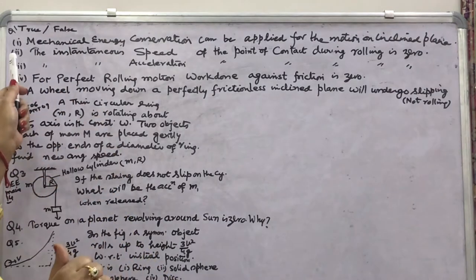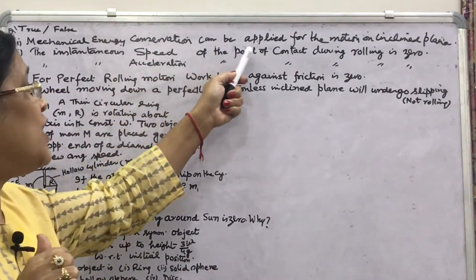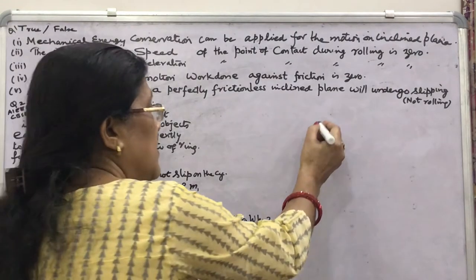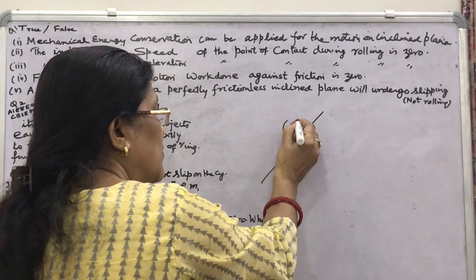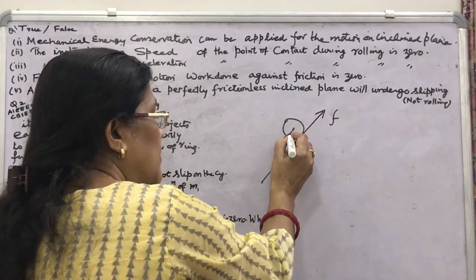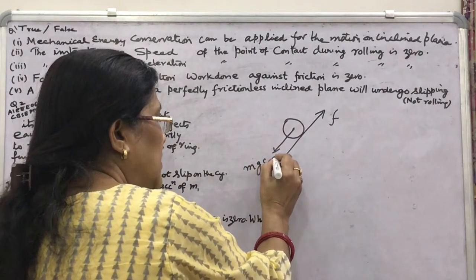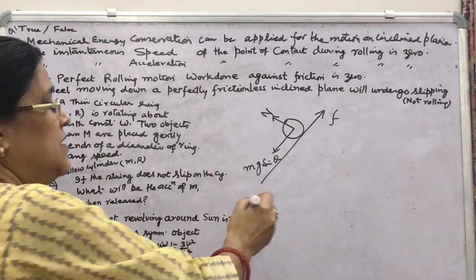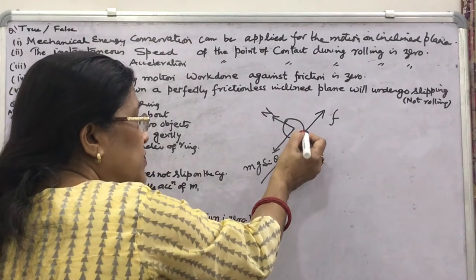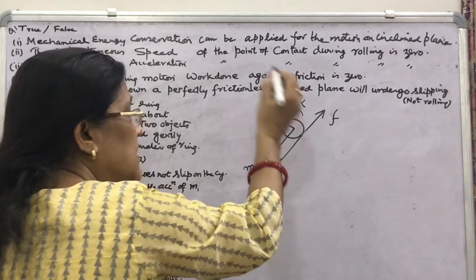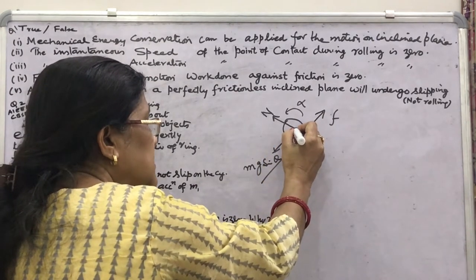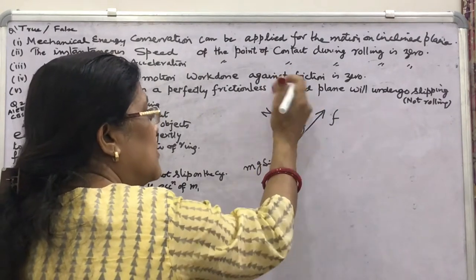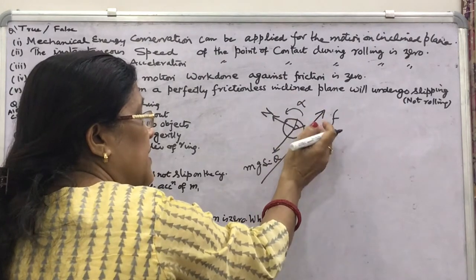The first part: mechanical energy conservation can be applied for rolling motion on an inclined plane. We have seen that on an inclined plane, if an object is rolling, friction acts upwards and the component of weight Mg sin θ acts downward. The normal reaction is perpendicular to the plane. This frictional force produces angular acceleration in the body, and rolling occurs — the angular displacement delta θ — so the work done by them is positive.